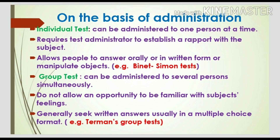Individual tests, as the name suggests, can be administered to one person at a time. They require the test administrator to establish rapport with the subject — understanding the subject's feelings and emotions before conducting the test. Such tests allow people to answer orally, in written form, or by manipulating objects, and are called performance tests. An example is the Binet-Simon test.